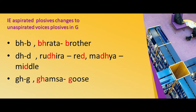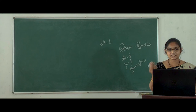The Indo-European language today is preserved only through Latin, Sanskrit, and Greek. For example, 'ghansa' — the 'gh' is an aspirated plosive — when it comes into Germanic it changes to 'g', giving us 'goose'. This is the first set of change found by Jacob Grimm: aspirated plosives change into unaspirated plosives.